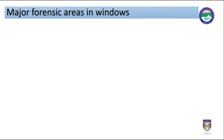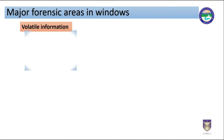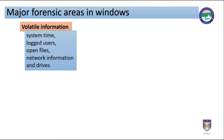Let us talk about major forensics areas in Windows. More generally, the investigator likes to access and analyze the following areas in Windows. Volatile information includes system time, logged users, open files, network information, mapped drives, shared folders, etc. These and many more aspects will be discovered in the next section under the Windows volatile information heading.